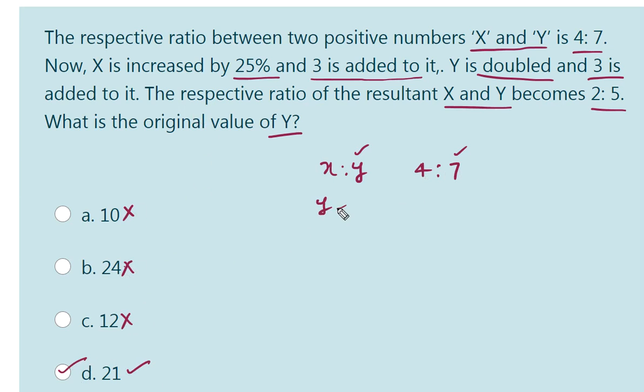So as Y value is 21, X value will be: 7 times 3 is 21, 4 times 3 is 12.